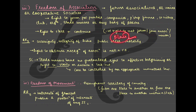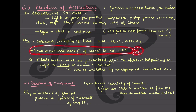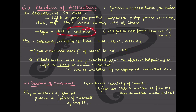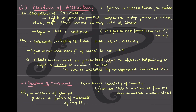However, this is not a negative right - it does not include the right to not form or join an association. It is only about starting and continuing. The reasonable restrictions are: sovereignty, integrity, public order, and morality. Also, the right to obtain recognition of an association is not a fundamental right - starting and continuing is okay, but recognition depends on the respective acts like the Societies Act or Companies Act. The Supreme Court has also said that trade unions have no guaranteed right to effective bargaining, strike, or lockout - this can be controlled by appropriate industrial law.